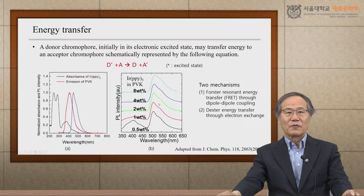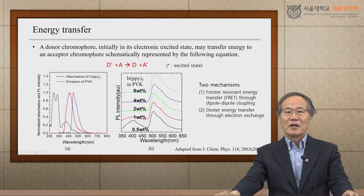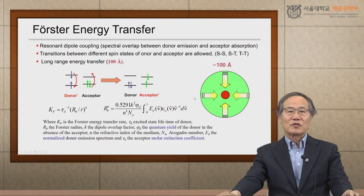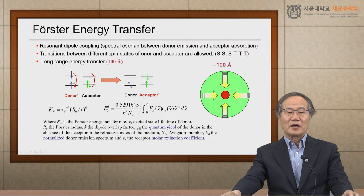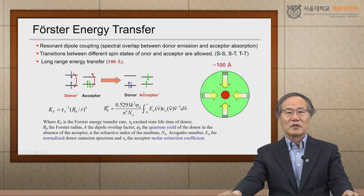This process is called energy transfer, expressed by this rate equation. There are two different mechanisms: Förster energy transfer, also called resonant energy transfer — in short, FRET — and Dexter energy transfer. Förster energy transfer is through resonant dipole coupling, shown schematically here. The excited donor experiences a transition from the excited state to the ground state, and the acceptor molecule gets the energy from the donor and becomes excited, resulting in a ground state donor and an excited acceptor. This is called dipole-dipole coupling.